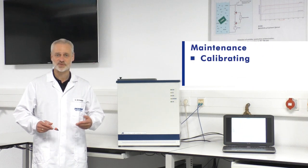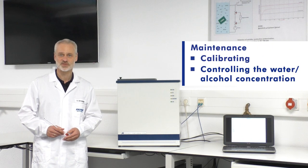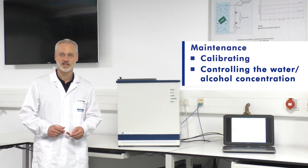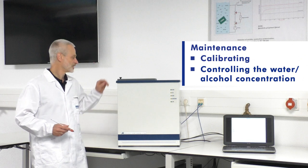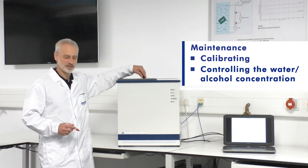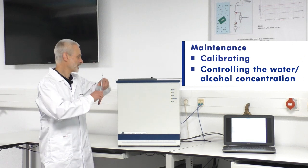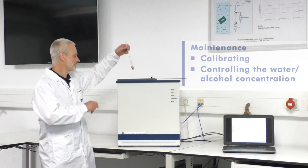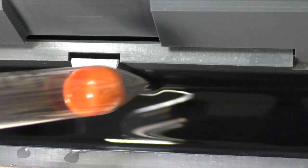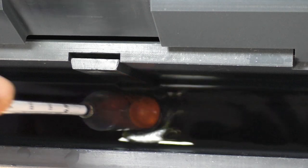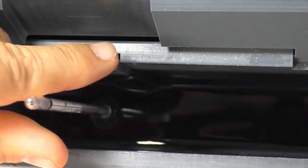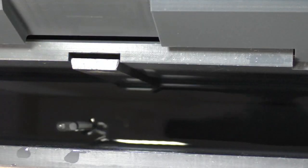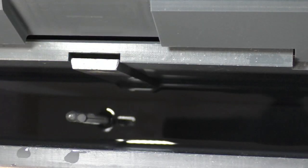Third, you have to maintain the equipment. This means a calibration at least once per year and controlling the water-alcohol concentration once per shift, or before measuring in the case of infrequent use.